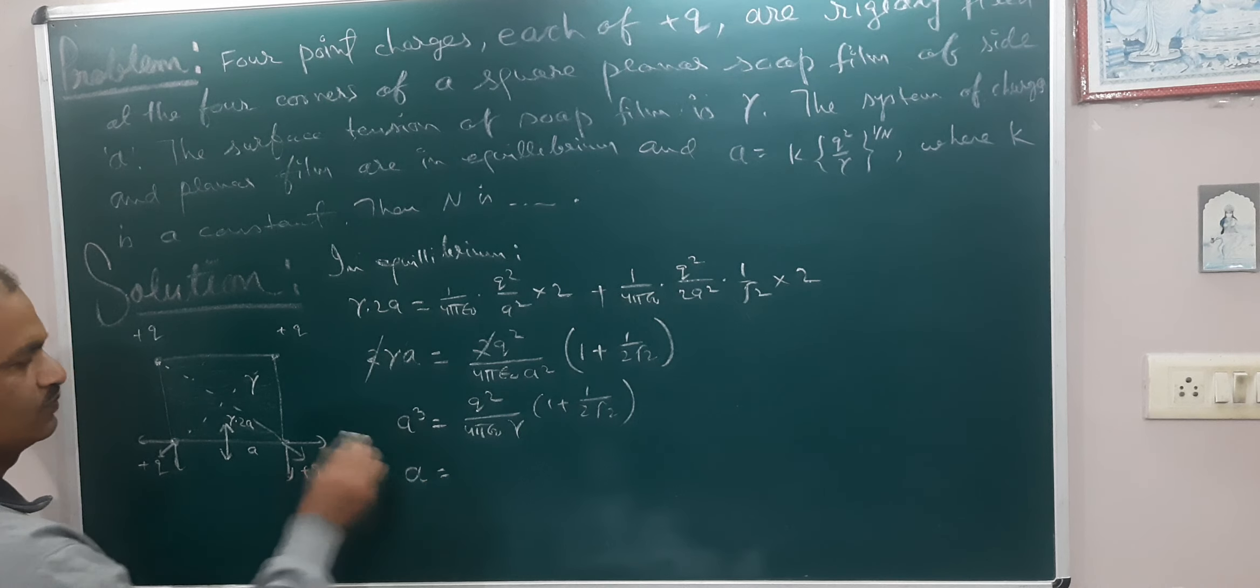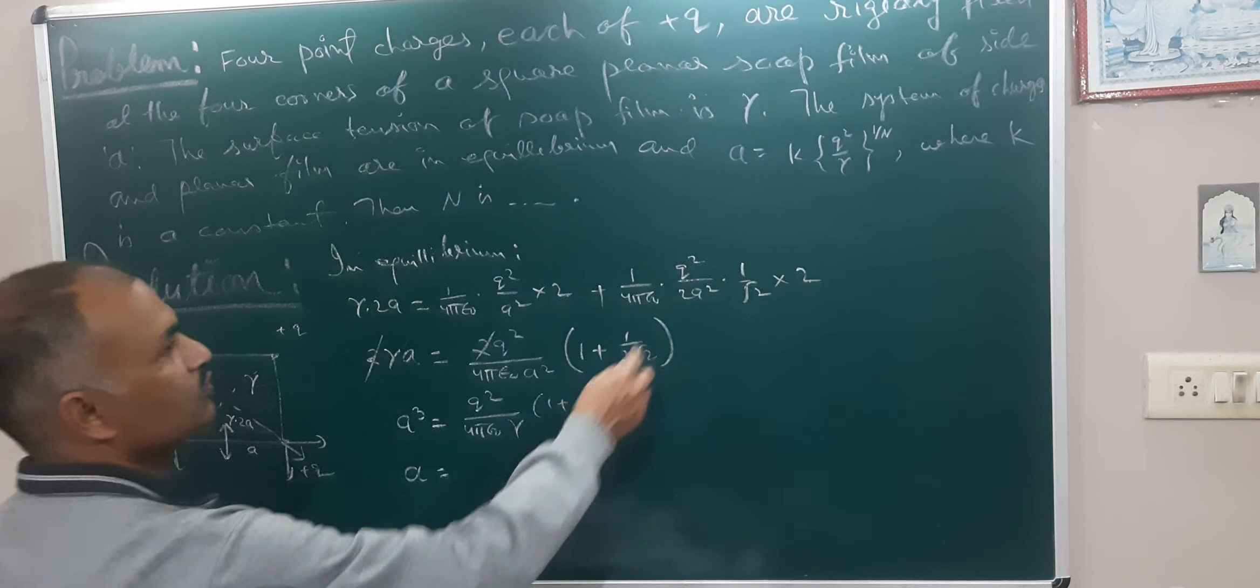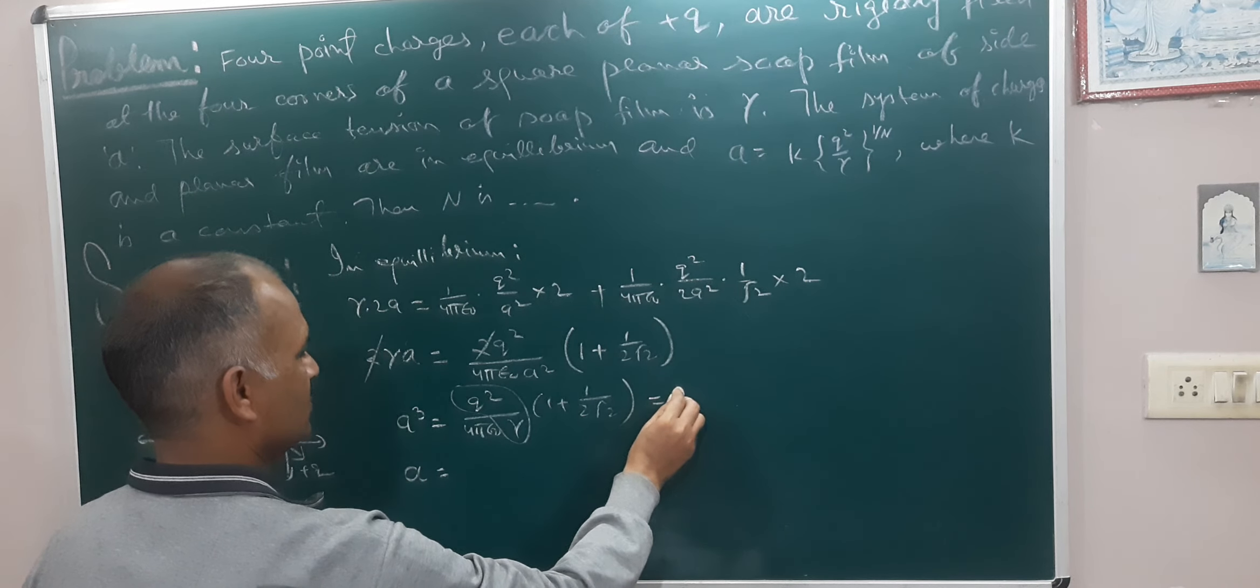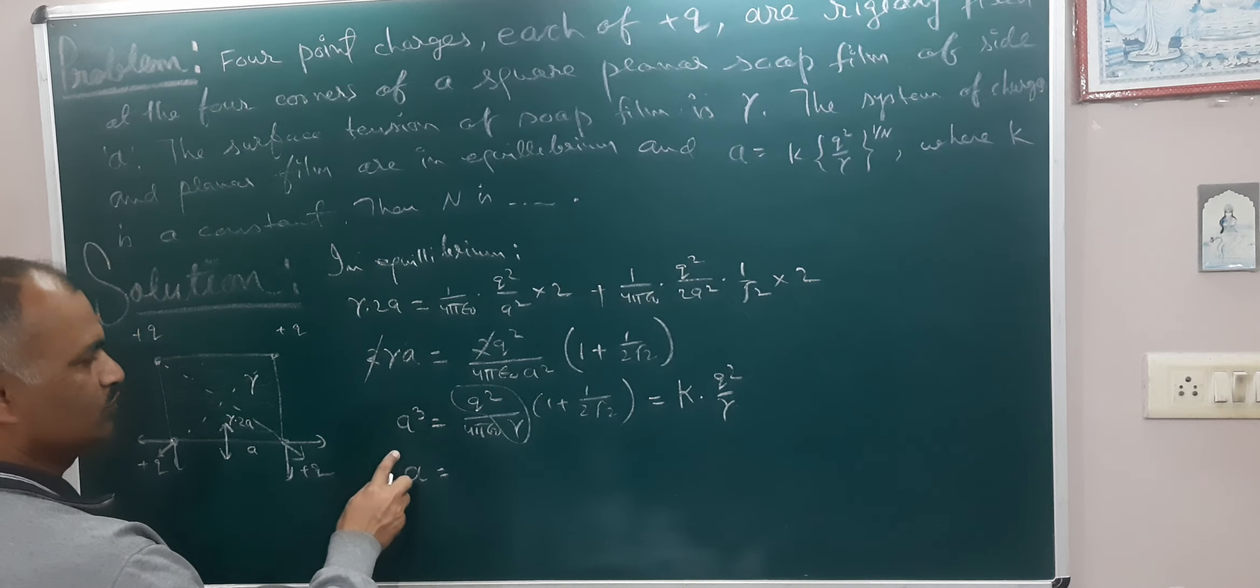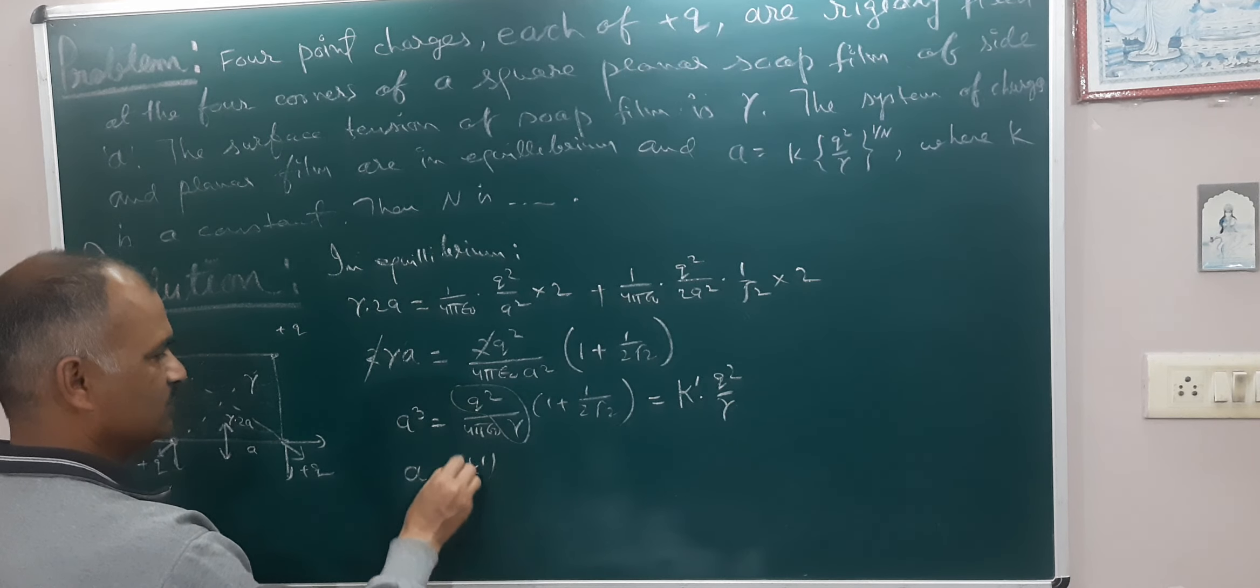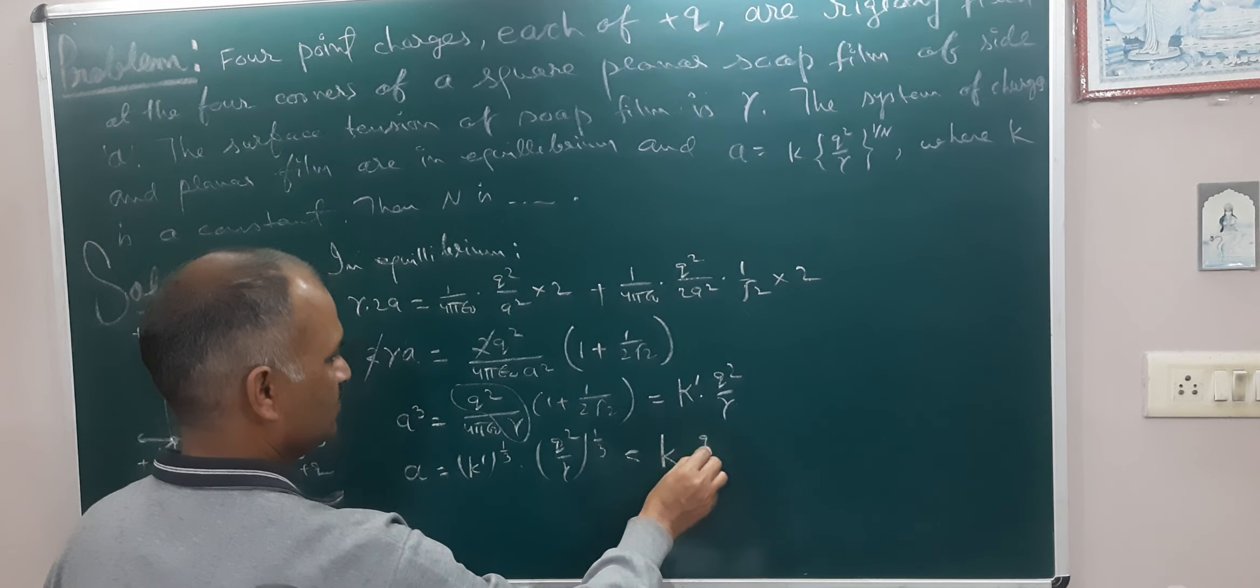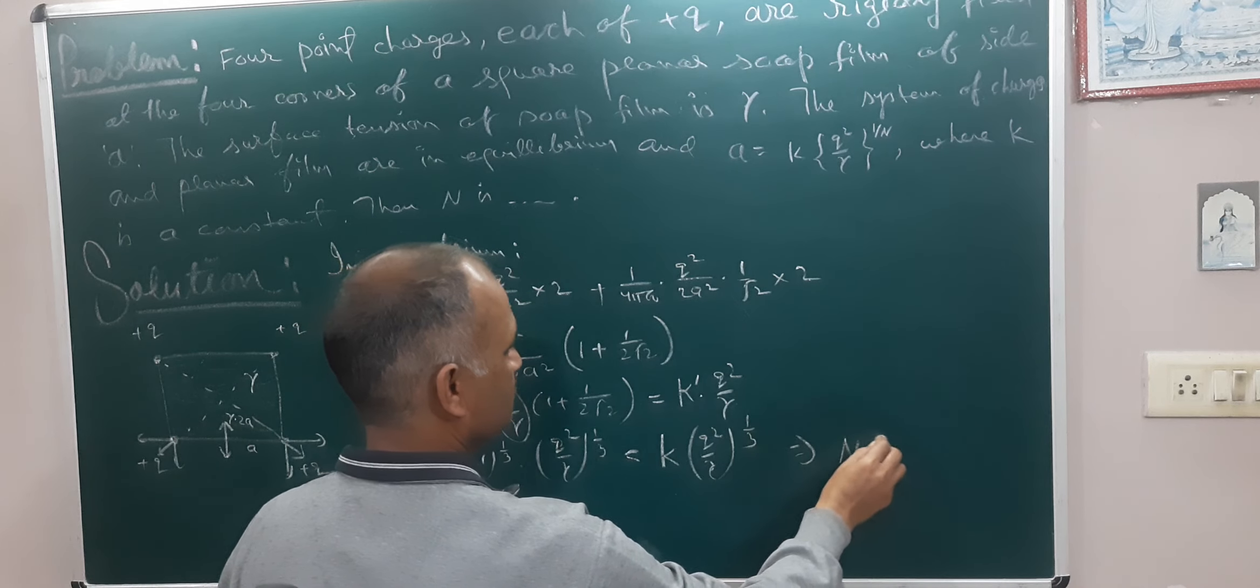So A is equal, Q square upon gamma into 4 pi epsilon naught, 1 plus 1 upon 2 under root 2, power 1 upon 3. So it is a constant, it is K or Q square upon gamma power 1 by 3. So N is 3.